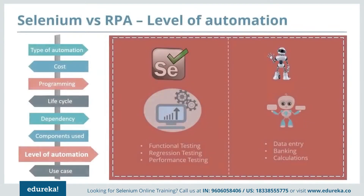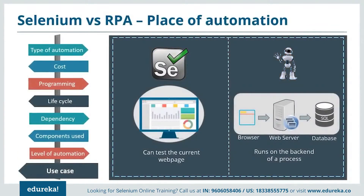Regarding the level of automation: Selenium does not automate any clerical processes — it automates functional, regression, and performance testing. Whereas RPA automates all clerical processes like data entry and calculations. On use case: Selenium works on the front end of the process and can test only the current web page, whereas RPA works on the back end and deals with time-consuming processes. Browser details are sent via the web server and stored in sequence onto the database.